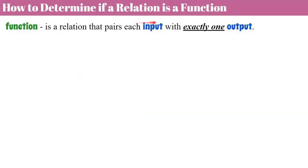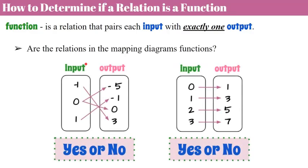Now we're going to determine if a relation is a function. A function is a relation that pairs each input with exactly one output. I'm going to show you two ways today to determine if a relation is a function. The first way is to use a mapping diagram. Both of these mapping diagrams show a relationship — a relation — and we're wanting to know if those relations are functions. So all input-output sets are relations, but not all relations are functions.